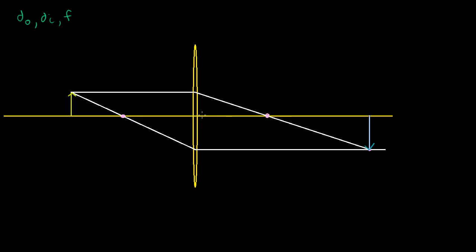Let's label these values and do a little bit of geometry and algebra to figure out the algebraic relationship. The distance of the object is this distance from the object to the lens. The distance from the image to the lens — that's how far the parallel light ray had to travel after refraction. And then we have the focal length, which is just this distance here on either side of the lens.